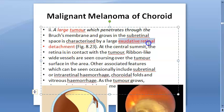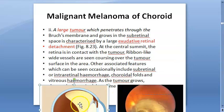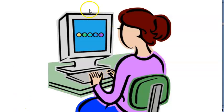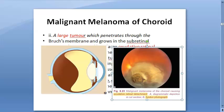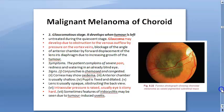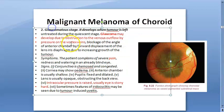As the tumor becomes large, exudative retinal detachment occurs because of the mass effect — you can see the retinal detachment in this photo caused by the malignant melanoma of the choroid. Then glaucoma may develop due to obstruction of venous outflow, specifically because of pressure on the vortex veins, causing raised intraocular pressure.